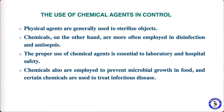In chemical methods of sterilization, a chemical is used to sterilize a particular environment. The examples of chemical methods of sterilization are disinfection and antisepsis. Disinfection is a process that eliminates many or most of the pathogenic microorganisms, except bacterial spores, on inanimate — meaning non-living — objects.